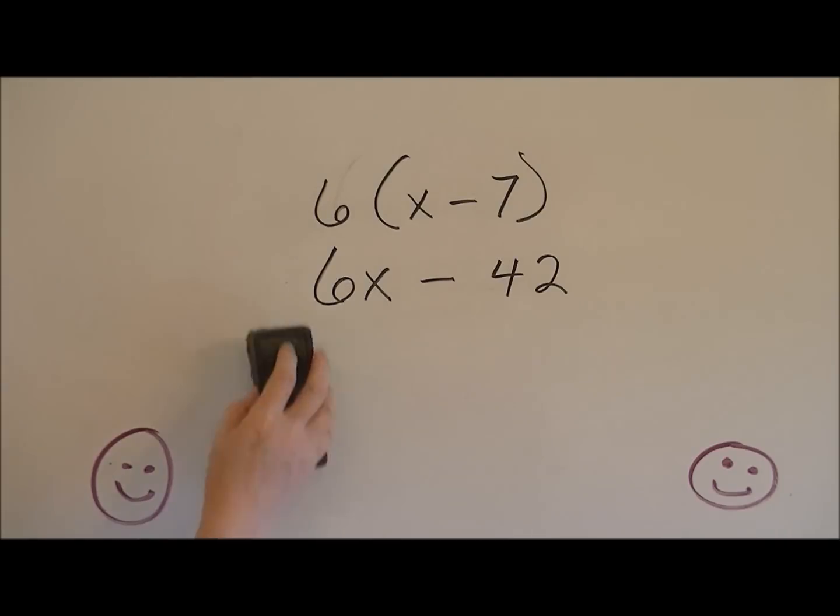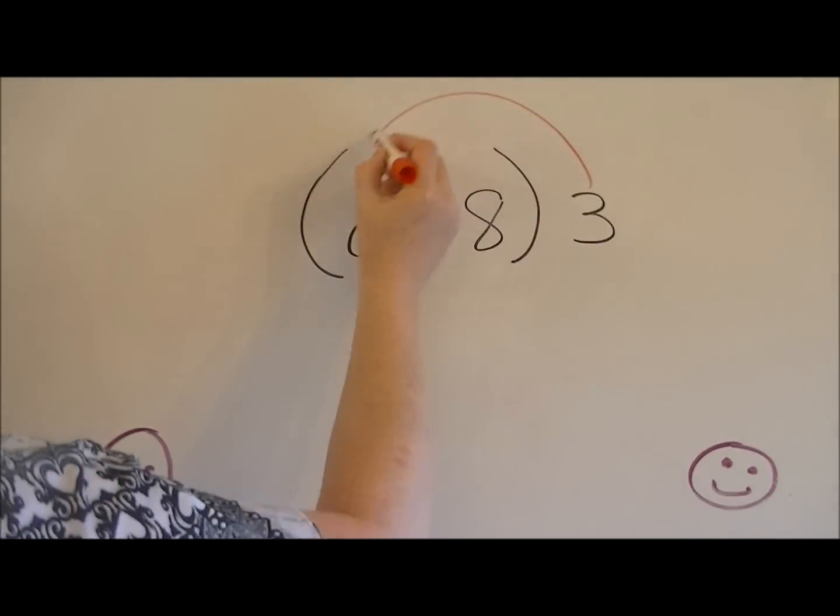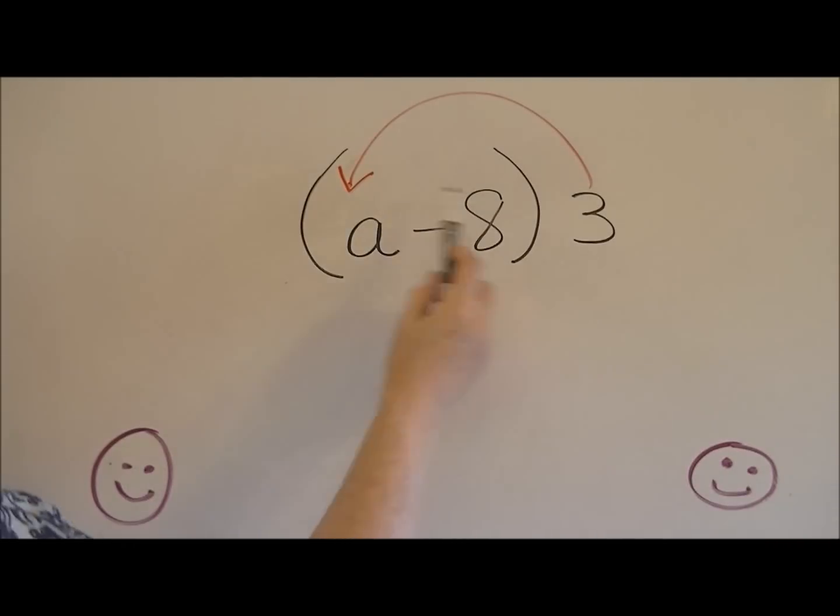Let's try another one. Sometimes you're going to see the number on the outside of parentheses on the right side instead of the left side. They want you to be able to multiply with it both ways. So we're going to do the same thing. We can make a rainbow come all the way to the front. Three times a is 3a.